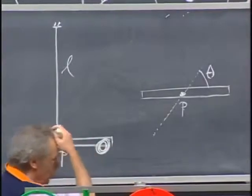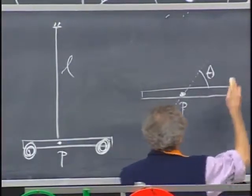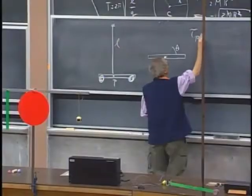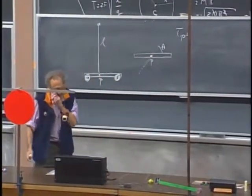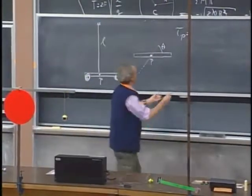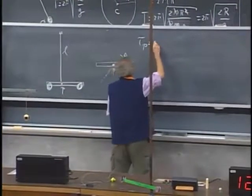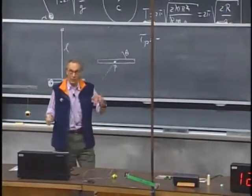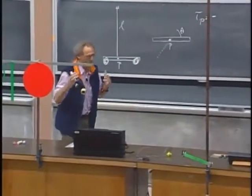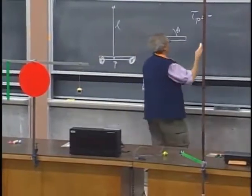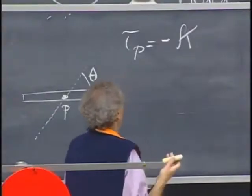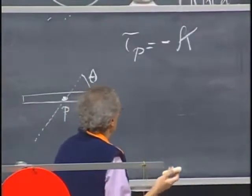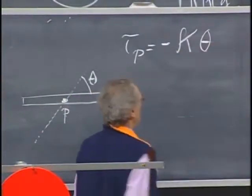The torque relative to point P is now very similar to what we had with a spring. We have a minus sign. Again, that illustrates that it is restoring. Instead of a K now, we have kappa, which is what we call the torsional spring constant, and now we have an angle which we call theta.